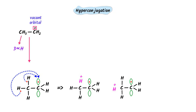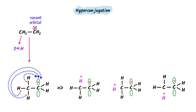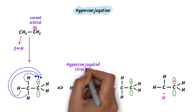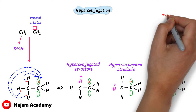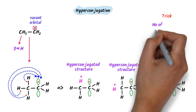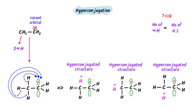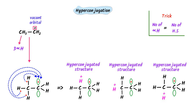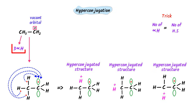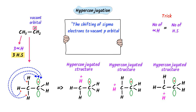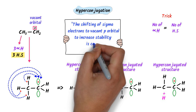Thirdly, there is another possibility: this hydrogen can also donate its electron to the adjacent vacant p orbital, giving yet another structure. These three structures are called hyperconjugated structures. The easy trick to find hyperconjugated structures is: the number of alpha hydrogens is equal to the number of hyperconjugated structures. We can see that there are three alpha hydrogens, so there are three hyperconjugated structures of this ion.